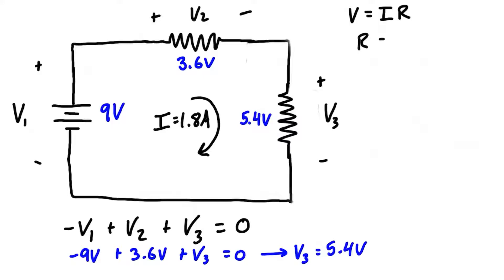We have V equals IR. We can rearrange that to have R equals V over I. So let's solve for r1 first. We have r1 equals v1 over i. They're going to have the same current because this is a series circuit, so there's only one path for the current to flow. So we just have 3.6 volts divided by 1.8 amps, and that gives us r1 to be 2 ohms.